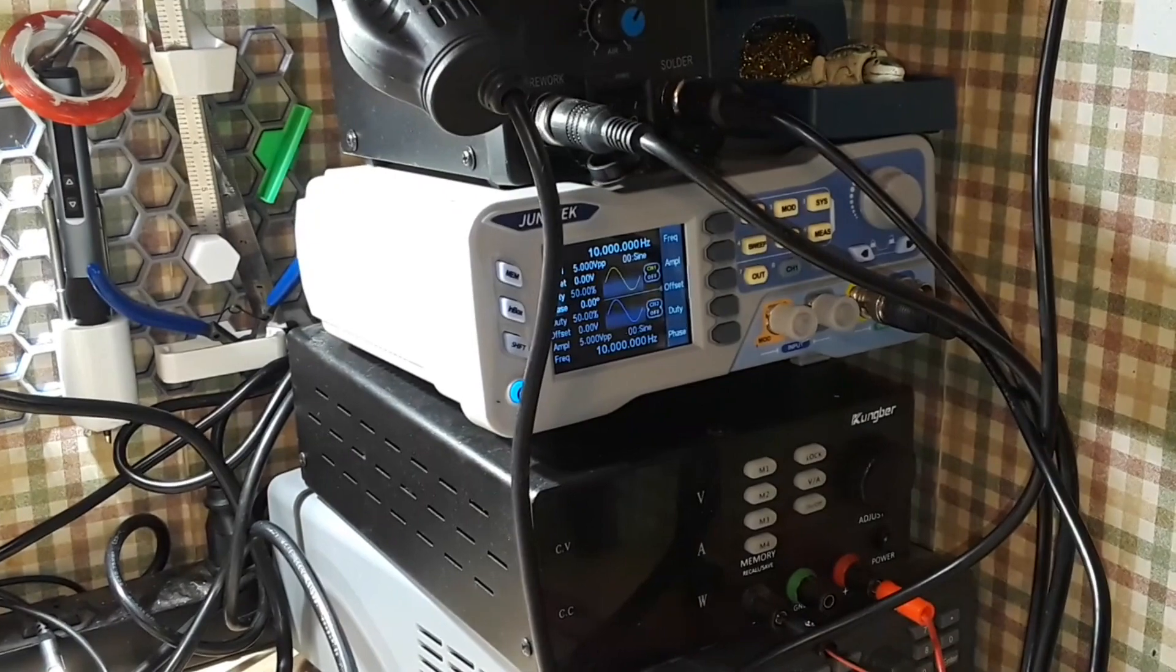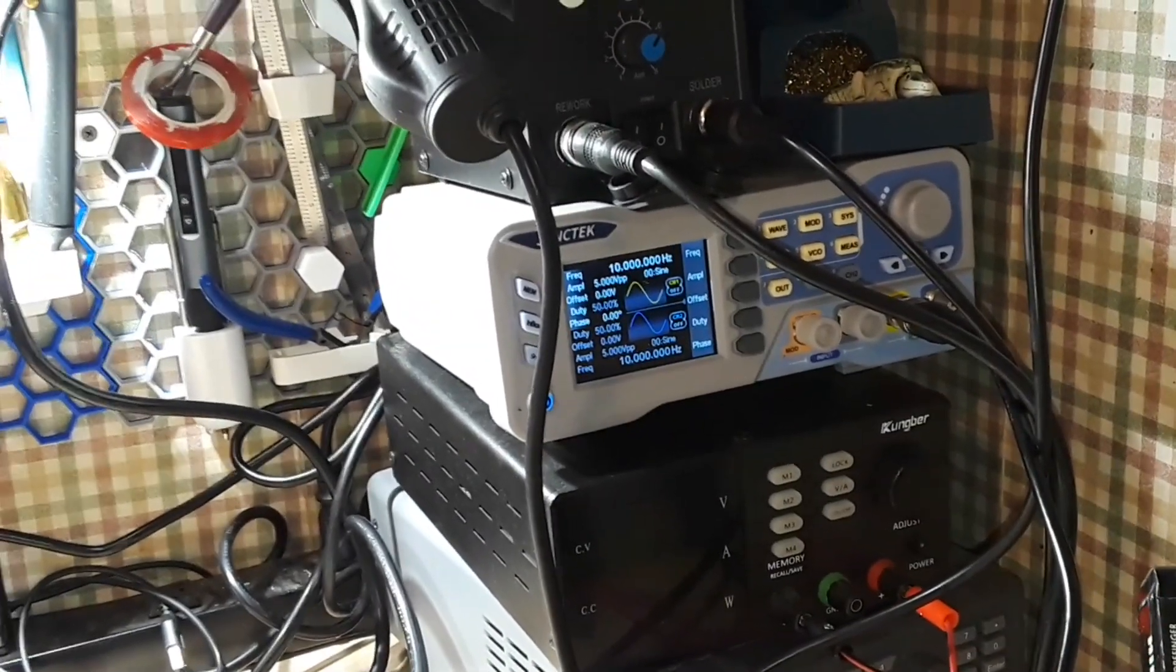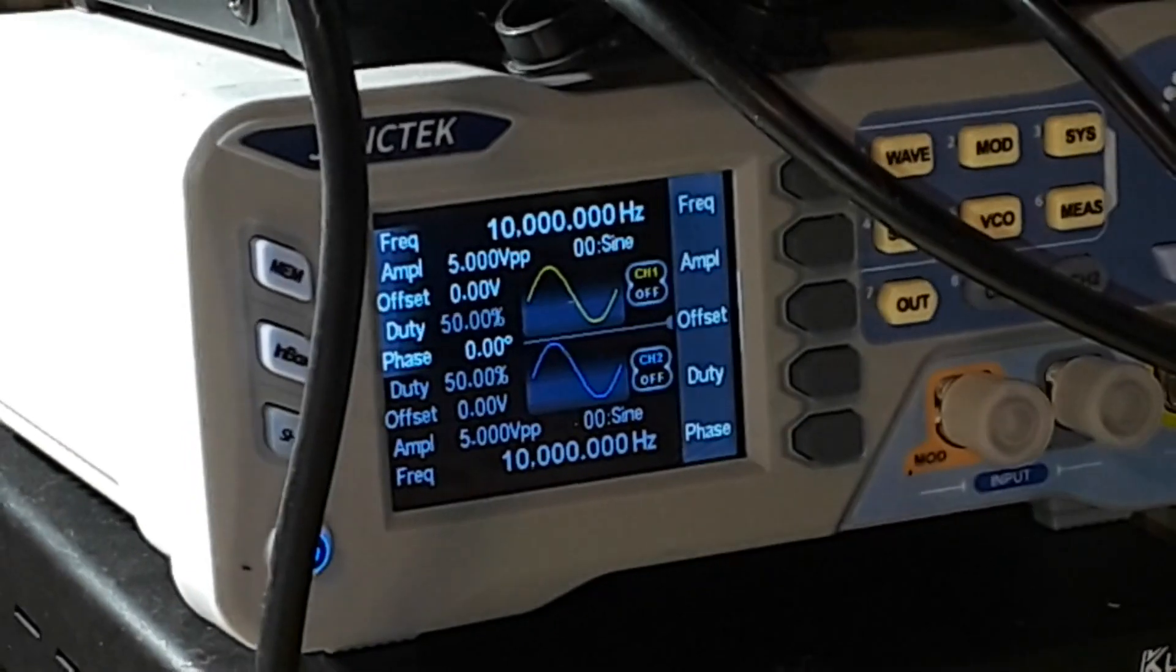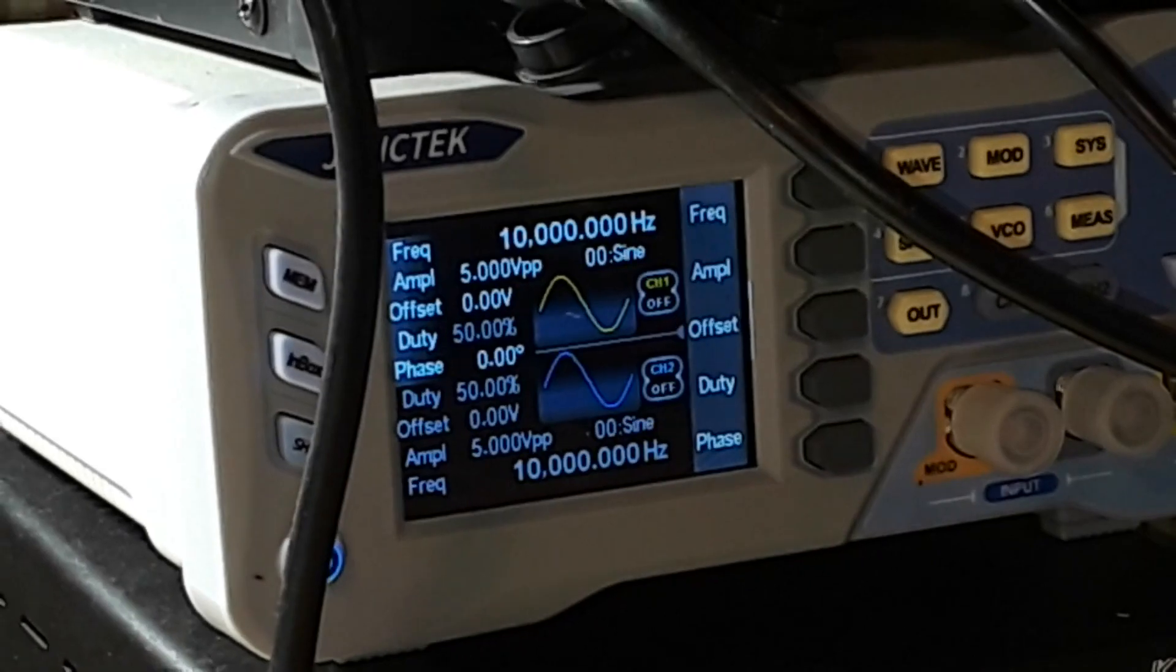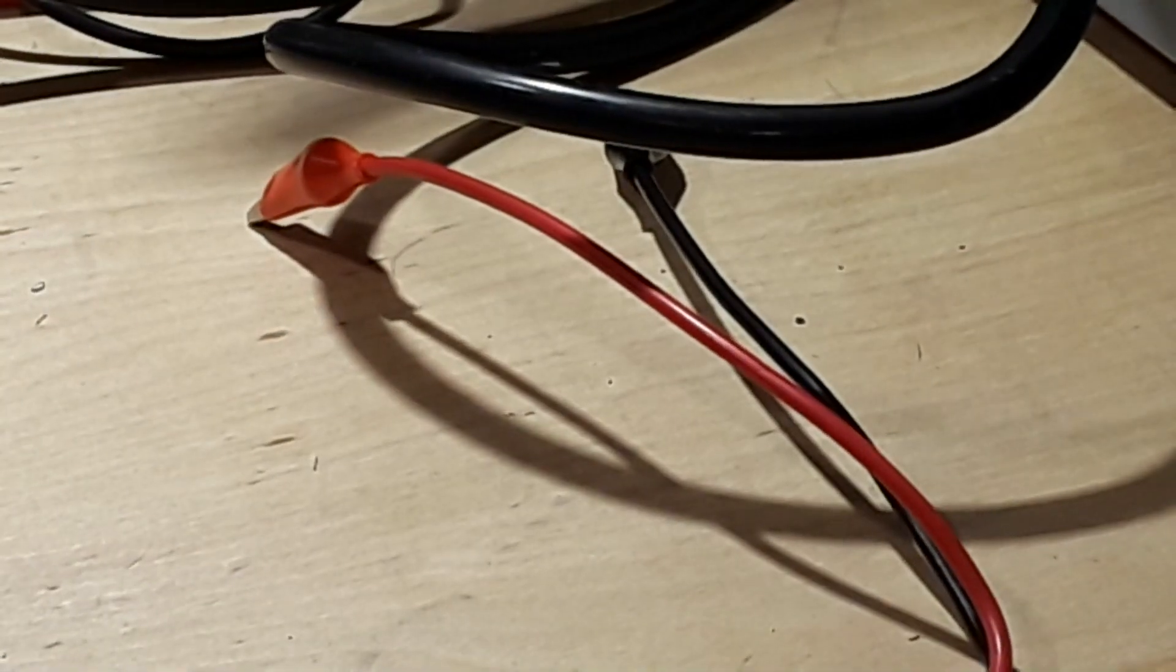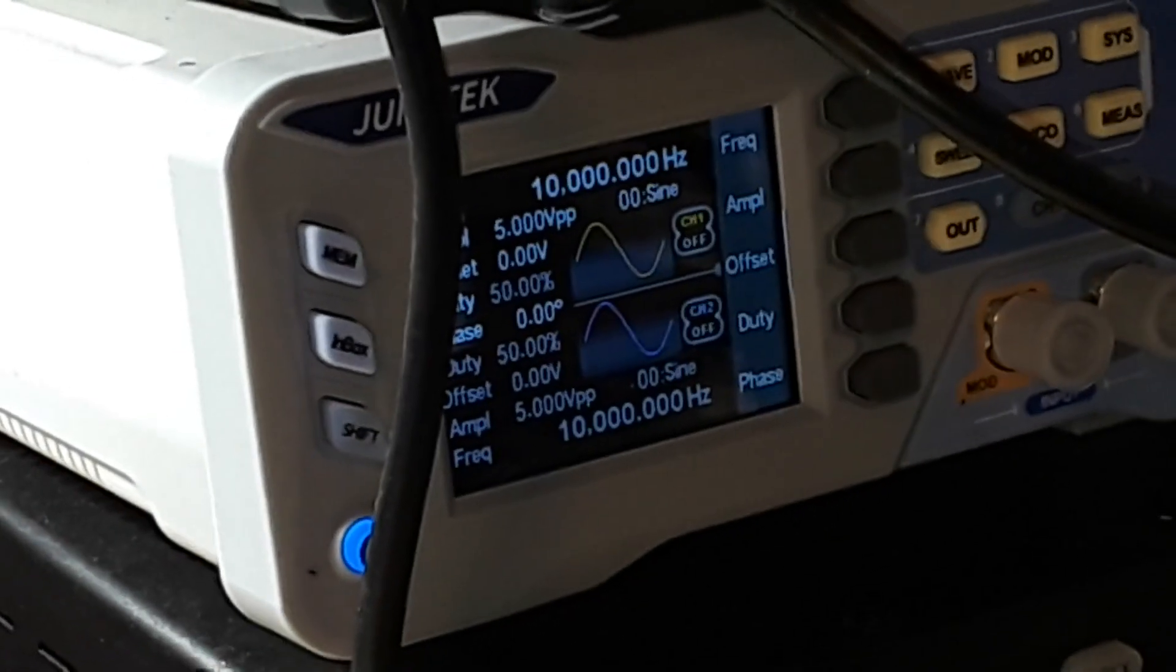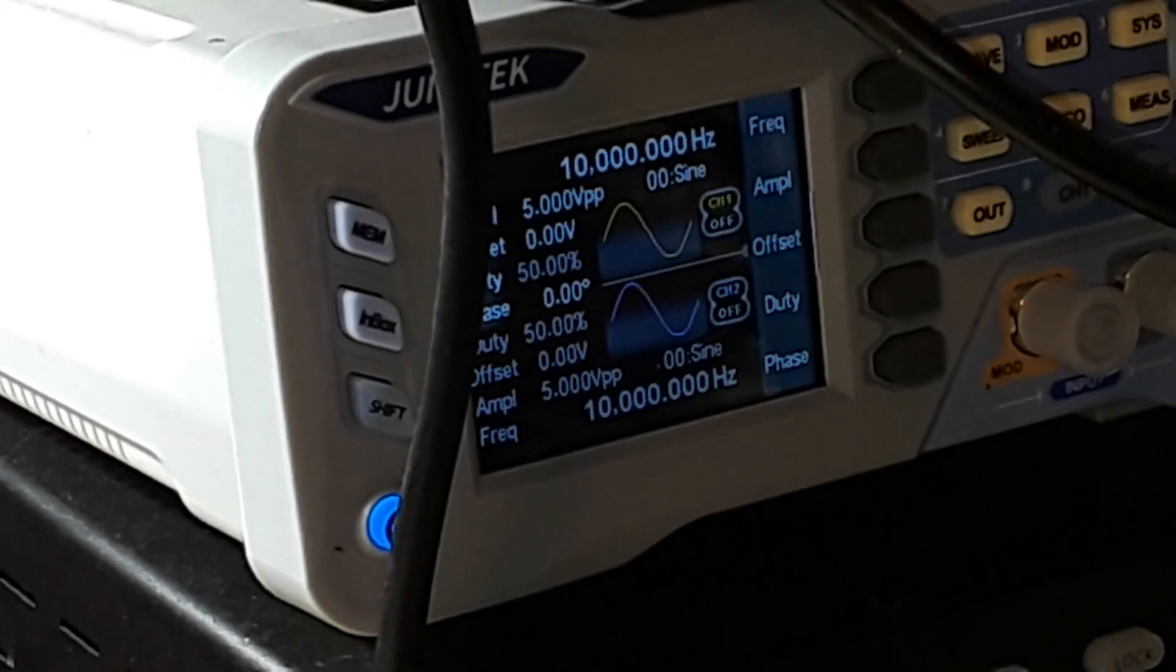Over here, we have my signal generator. The Junktek dual channel signal generator. And as you can see, it is generating a sine wave at 10 kilohertz at 5 volts peak to peak. It's going to come out of that BNC connector there and go to them little flippity-floppities right there. Now, the reason we're using this is because we don't want to play with our mains AC voltage and current because that is bad and can kill you. This is relatively safe. 5 volts AC off of here. Almost no current. It's not going to hurt us.